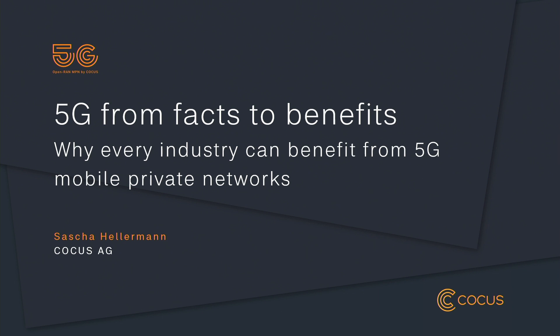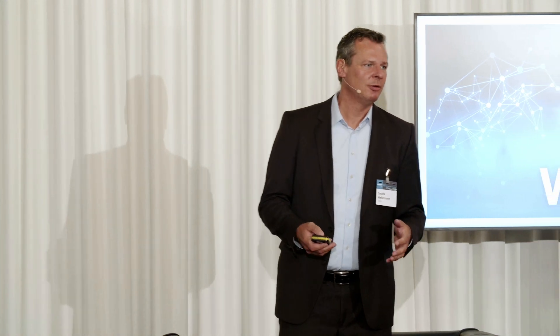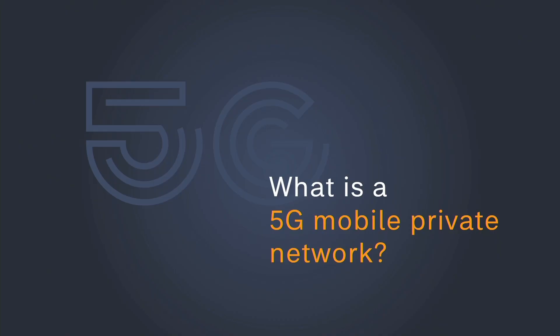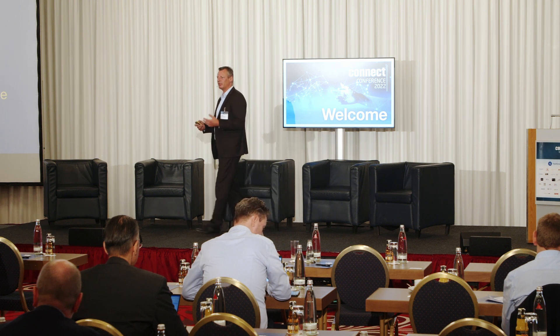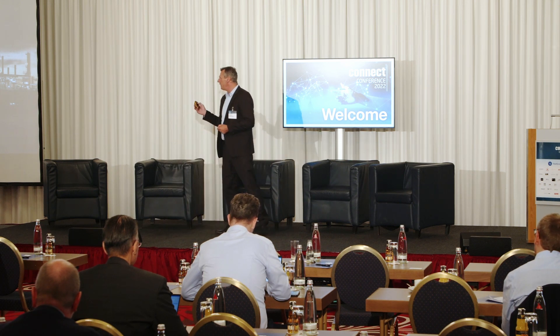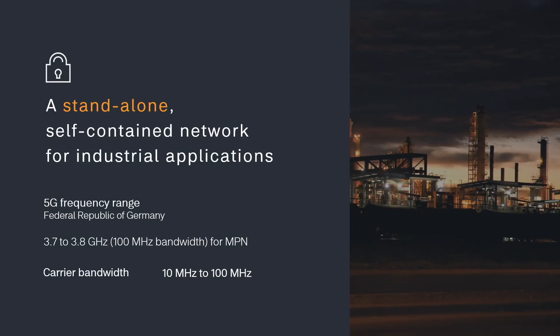When we are talking about industrial use cases we are mostly talking about mobile private networks. These can be run by a company or a public sector on their own, without any interaction with mobile network operators. A mobile private network is a standalone isolated network — regulators in Germany, France, and the UK have provided an own frequency spectrum that can be used exclusively by an industry or public sector on its own premises.